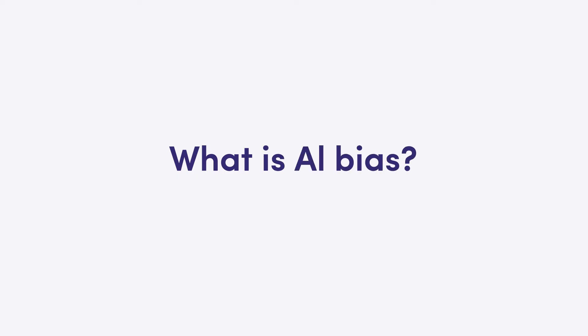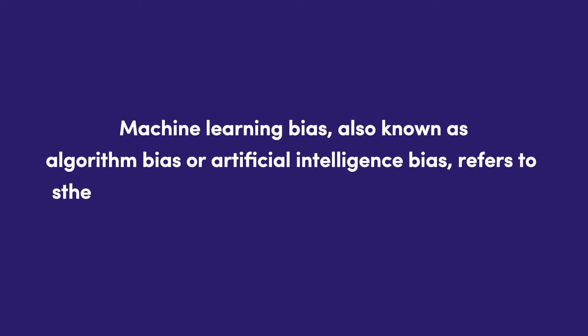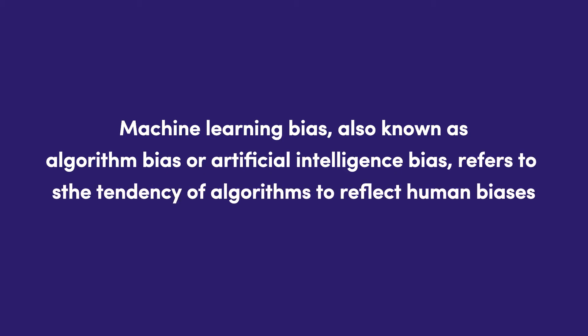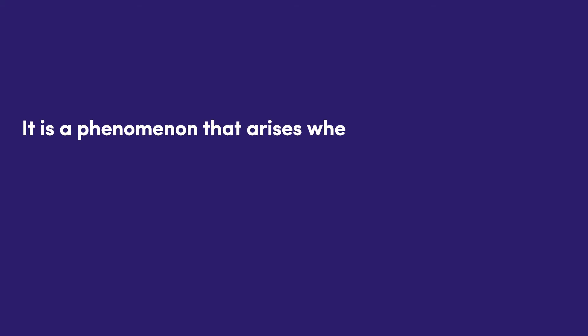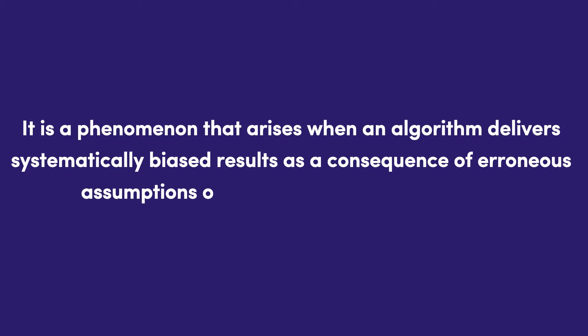You've probably heard this term being thrown around conversations, but what is it exactly? Machine learning bias, also known as algorithm bias or artificial intelligence bias, refers to the tendency of algorithms to reflect human biases. It is a phenomenon that arises when an algorithm delivers systematically biased results as a consequence of erroneous assumptions in the machine learning process.